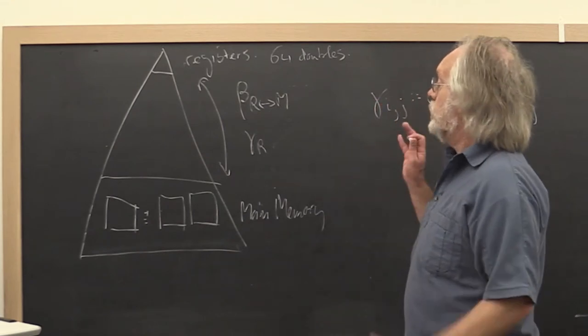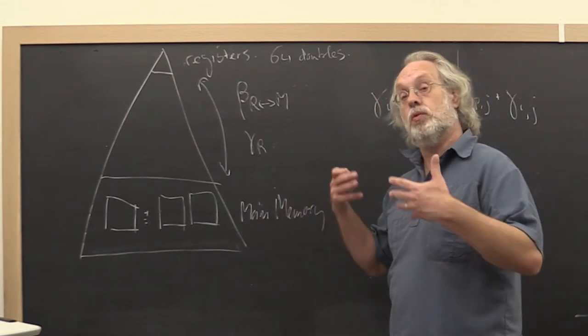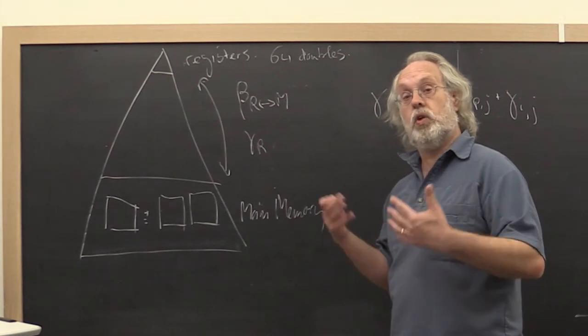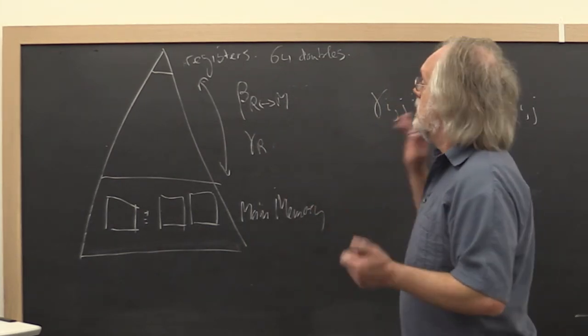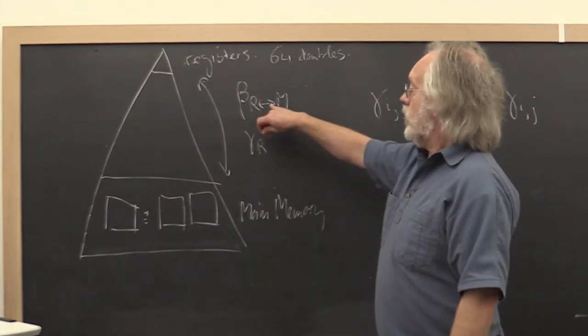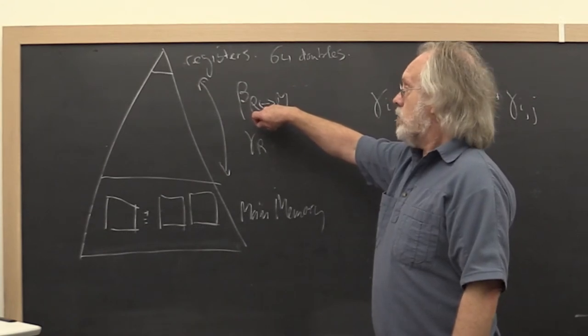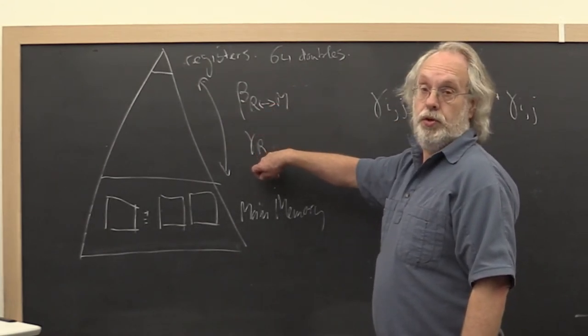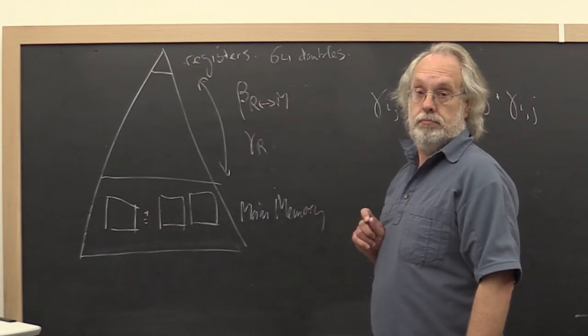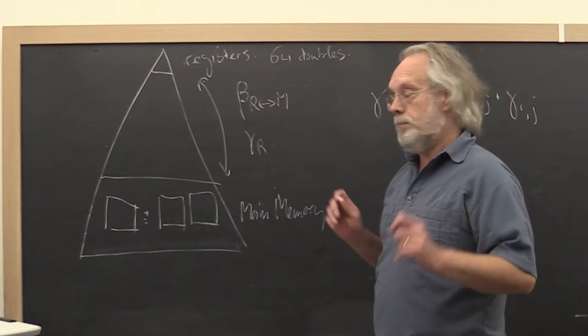Now to keep our model simple, again this may not be a realistic model but it's a model that will give us insight and that's good enough. To keep our model simple we're going to assume that while we're moving data we cannot compute and while we compute we can't move data. That's just to keep it simple.